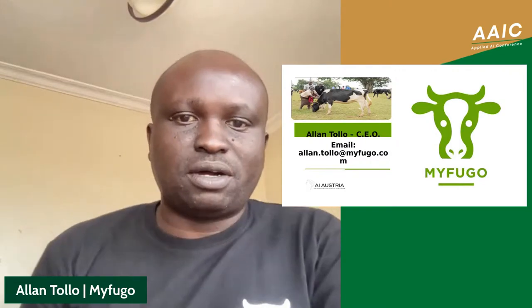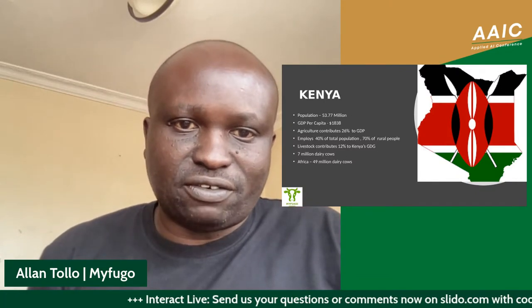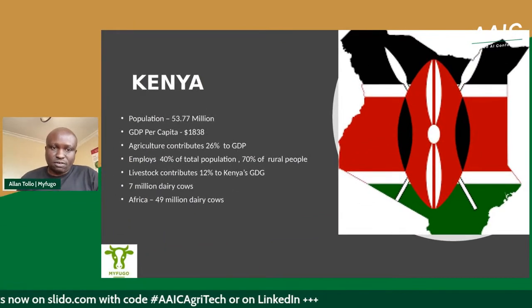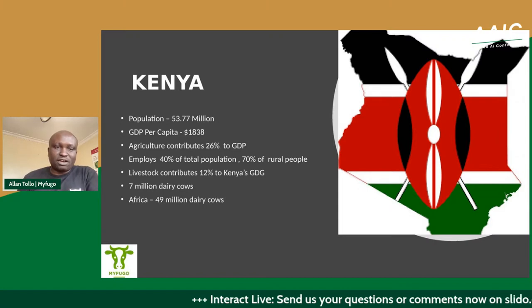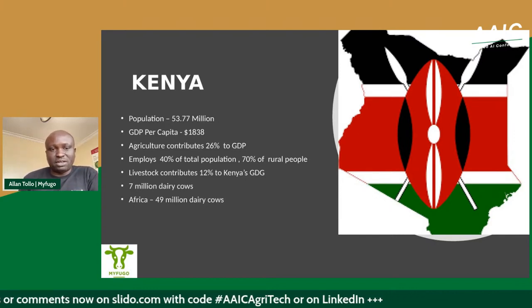Thank you everyone. My name is Alan Tzolo. I'm presenting for Kenya. I'm the CEO of Mifugo. Primarily Mifugo supports dairy smallholder farmers in Kenya. This is a very important aspect from a technology point of view — using the smart cow collar and embedded technology to help the small dairy farmer increase their dairy productivity. Kenya has a population of 53 million, with 80% being smallholder farmers, and 70% are rural people primarily relying on agriculture. Livestock contributes 12% to Kenya's GDP, and Kenya as a whole has 7 million dairy cows.